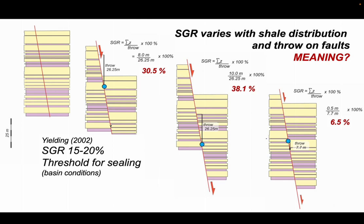Since then, it's been found that these sorts of values of 15% to 20% is a good threshold for sealing faults in basins elsewhere in the world.